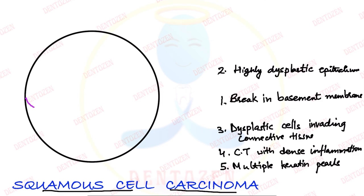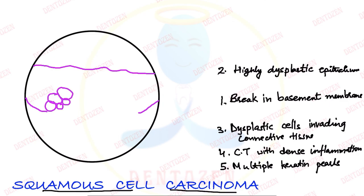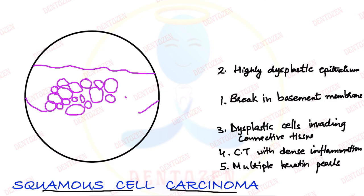So first we have to show the break in the basement membrane — it's not complete, it's not intact. The epithelial cells above it are highly dysplastic, meaning they are of different sizes and shapes. We can make an epithelium which is highly dysplastic, with different sizes and shapes of cells and nuclei. That is how a dysplastic epithelium looks.